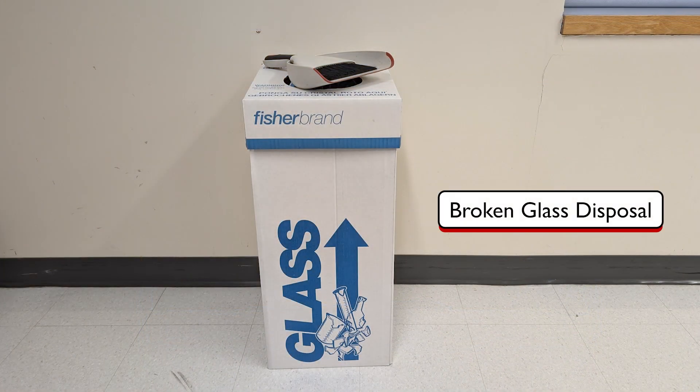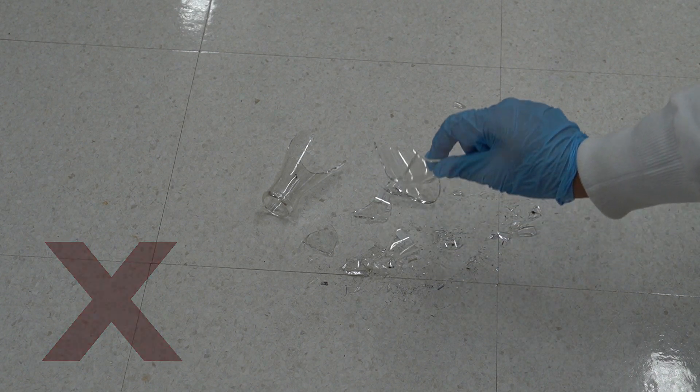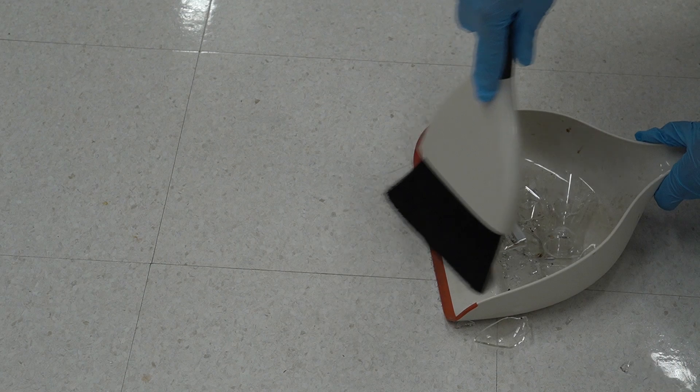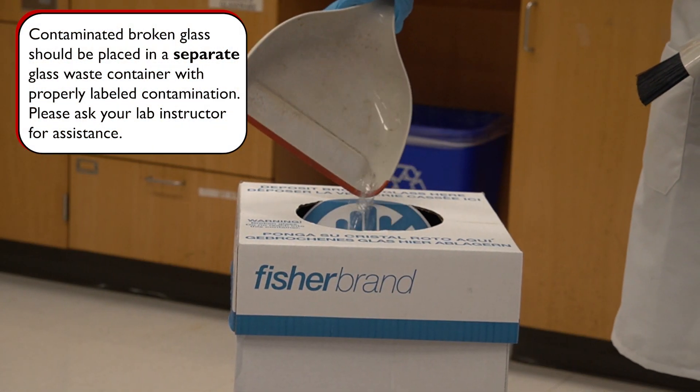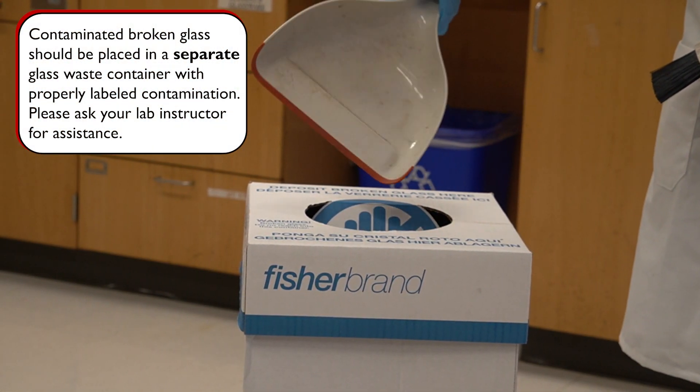The broken glass disposal box is where we put broken glassware. It is important to separate the sharp pieces of glass from other trash so we do not hurt those who handle the waste for us. Two notes about handling broken glass: one, we should never pick up broken glass by hand—use a broom and dustpan. Two, the glass that goes into the disposal box must be clean.